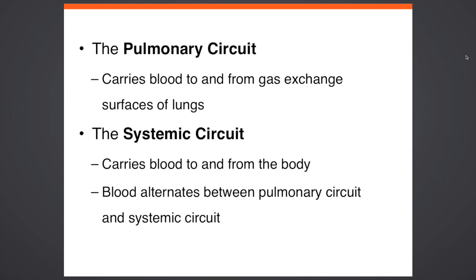The heart has a pulmonary circuit, which carries blood to and from the gas-exchanging surfaces of the lungs. The systemic circuit is the area that carries blood to and from the rest of the body. Blood alternates between the pulmonary circuit and the systemic circuit.